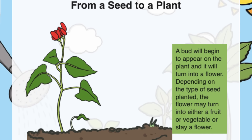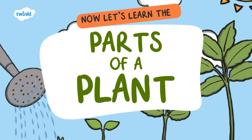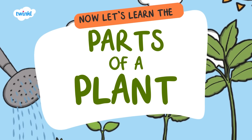A bud will begin to appear on the plant and it will turn into a flower. Depending on the type of seed planted, the flower may turn into either a fruit or vegetable, or stay a flower. Seeds are located in the center of the flower. Once the plant stops growing, it will drop seeds onto the ground. Some seeds are spread by the wind or by animals. These seeds will begin to grow in the soil and the life cycle of the plant will repeat. How cool is that! Now let's learn the parts of a plant.